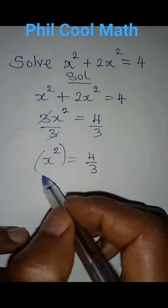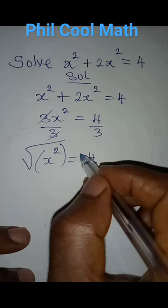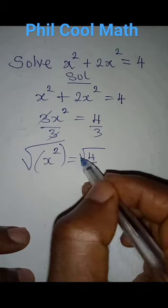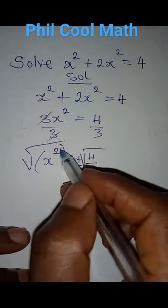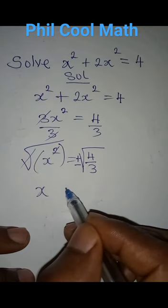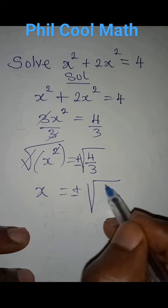Now we need to remove this from here by taking the square root of everything. Then take the square root of this. But remember that we are going to have positive or negative value. This and this will go, so that x will be equal to positive or negative square root of 4 over 3.